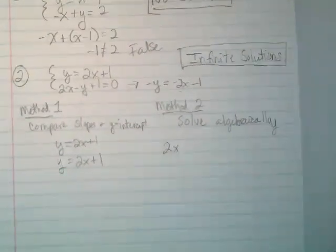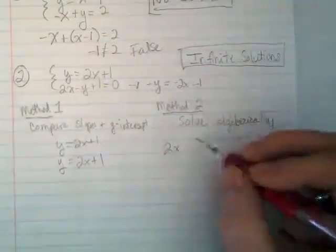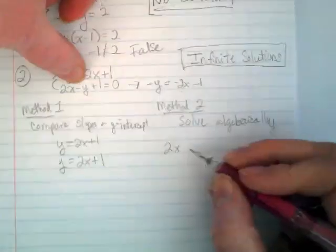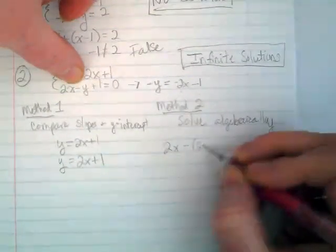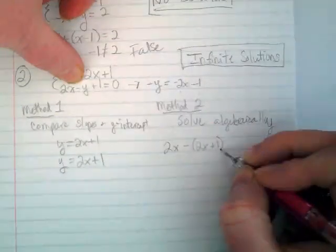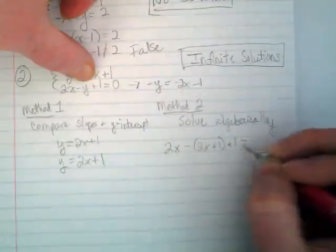I changed his mind yesterday. Or no, I didn't. Somebody at lunch did. 2x minus 2x plus 1 plus 1 equals 0.